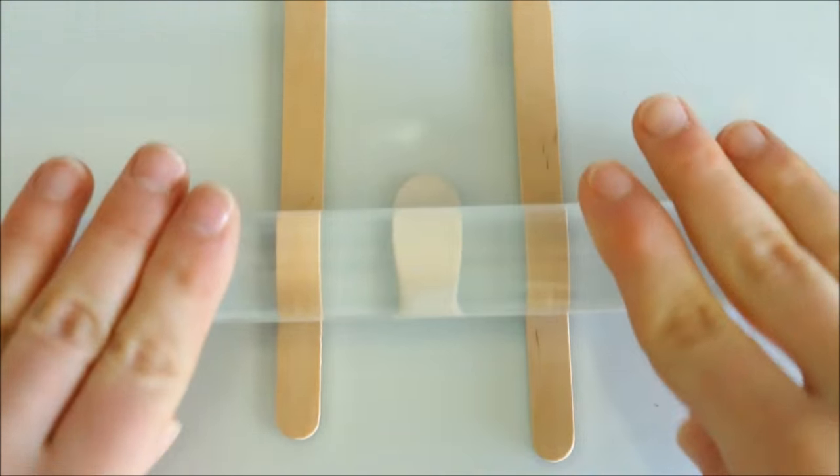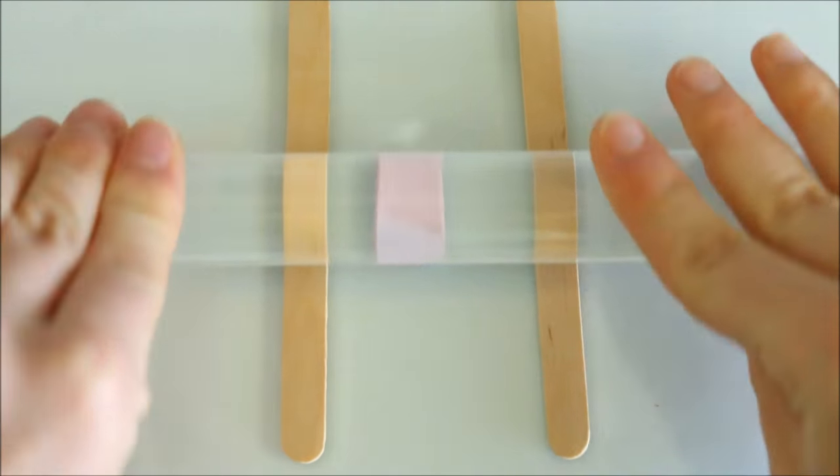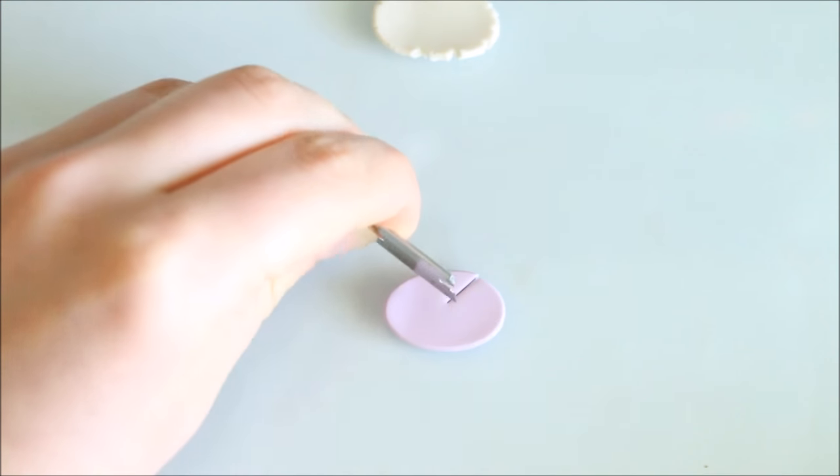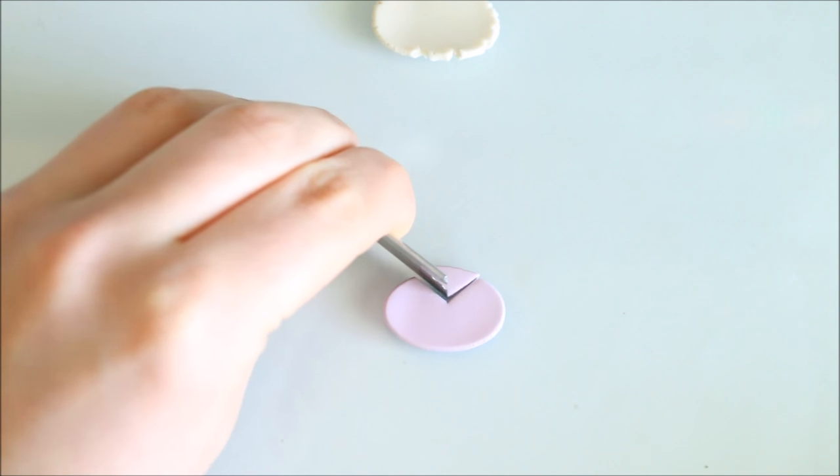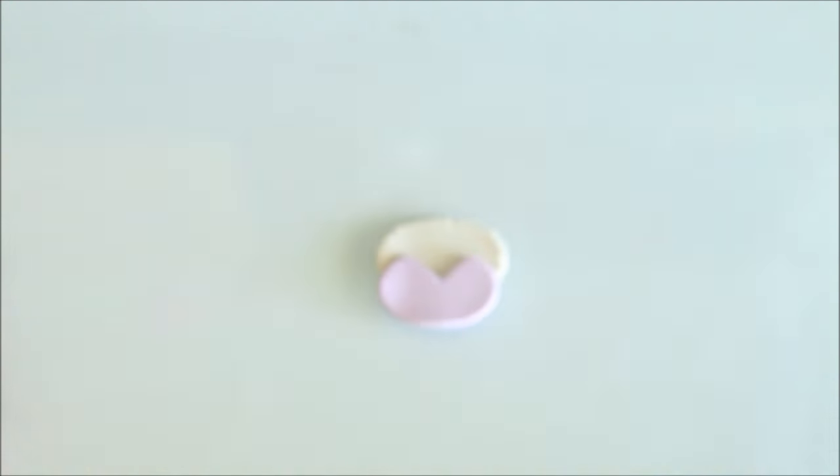So for this next design I used pearl clay again by Sculpey and then the purple color is called lilac which is by the Fimo effects range. For this one I firstly cut a triangle shape out the top of the purple clay and then set it on top of the pearl color to act as a template. And this helped me cut it on the same angle.